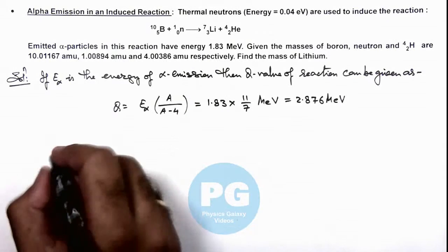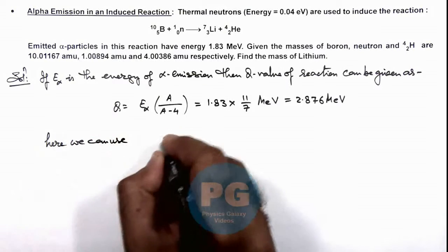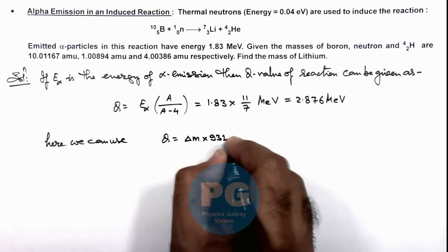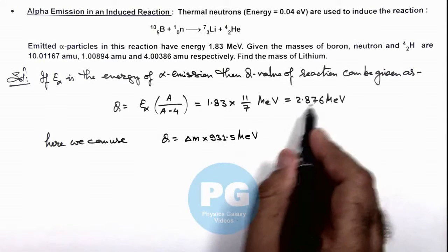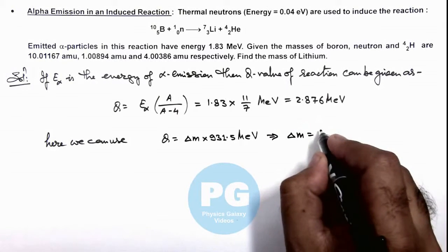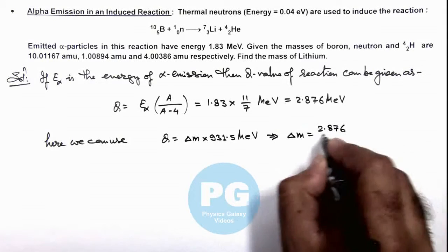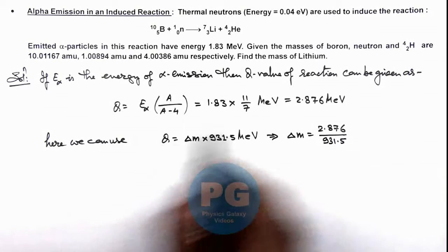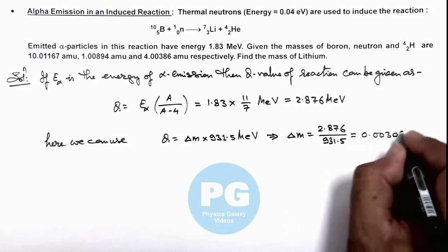So in this situation here, we can use Q value is always written as mass defect multiplied by 931.5 MeV. So here we can substitute the Q value which gives us the value of mass defect which is 2.876 divided by 931.5. So on substituting the value of Q and simplifying, this gives us 0.00308 amu.